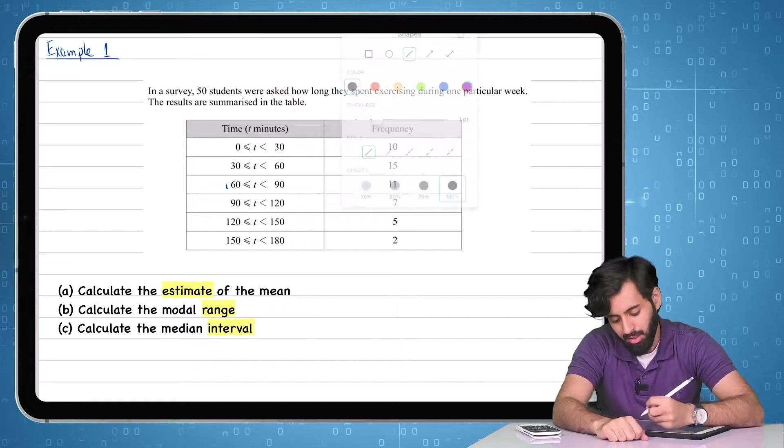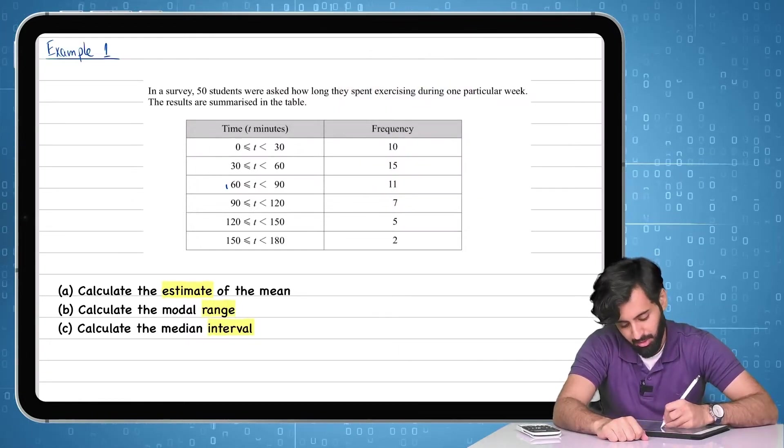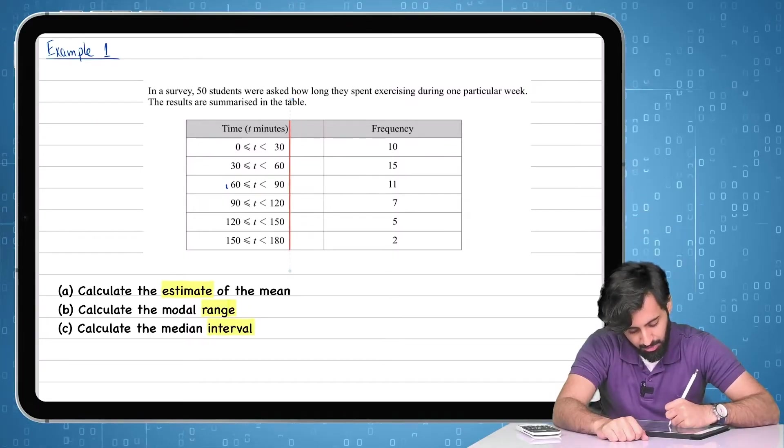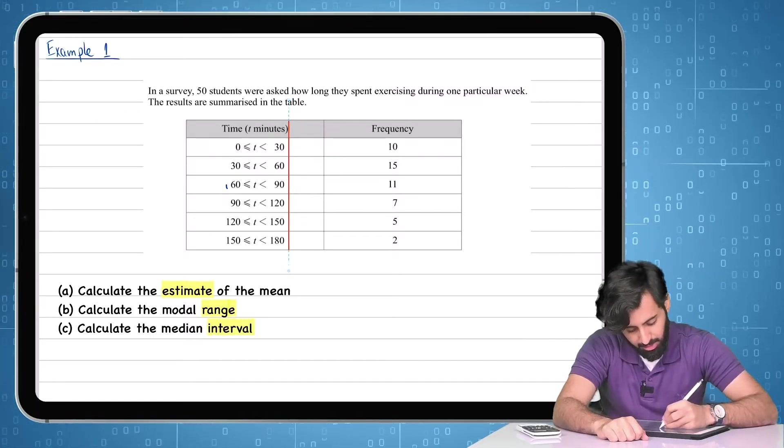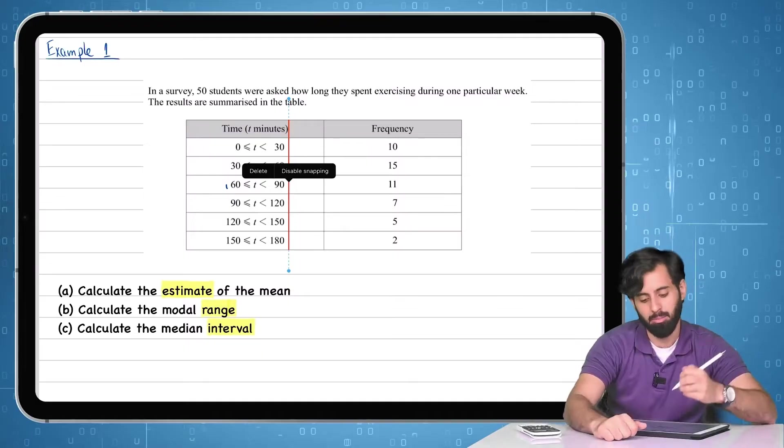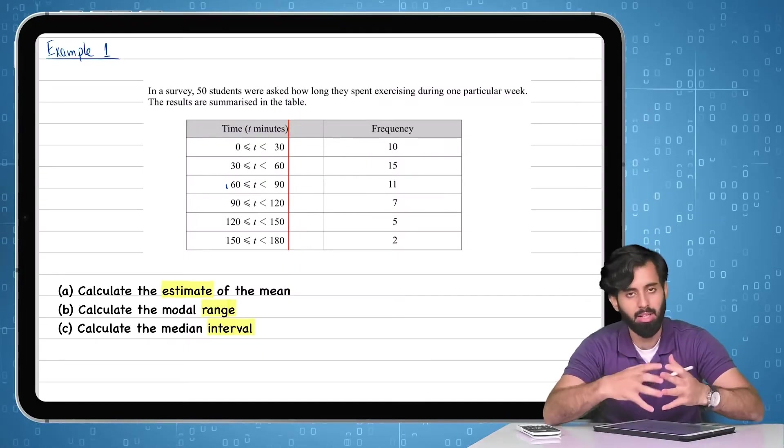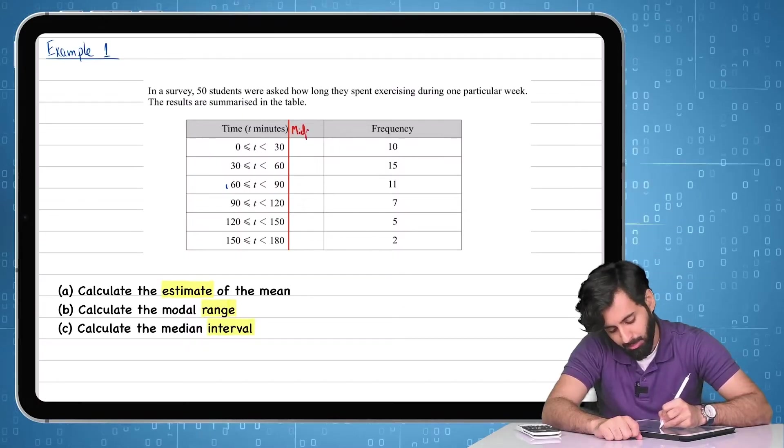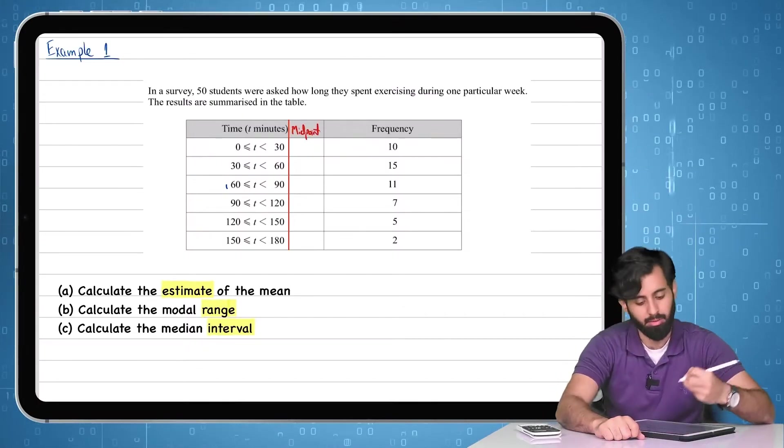Now, how do we calculate the estimate of the mean here? We know that we have to take the frequency and multiply it by the time. But the question is, what value of time exactly are we going to multiply it by? So in order to come up with a more standardized approach, here's what we do. We take the midpoint of every interval.